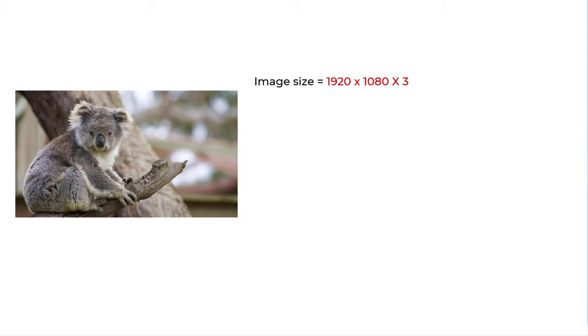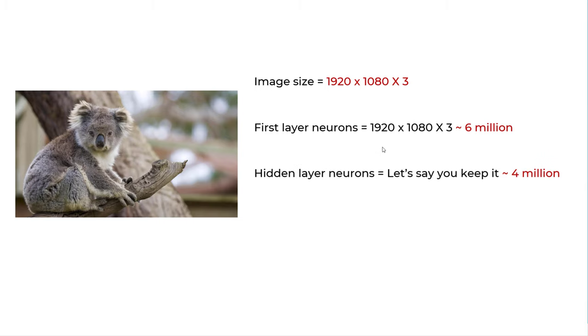The image size is 1920 by 1080. We have three as RGB channel here, one for red, green and blue. In this case, the first layer neuron itself will be 6 million. If you have let's say hidden layer with 4 million neurons, you're talking about 24 million weights to be calculated just between the input and hidden layer.